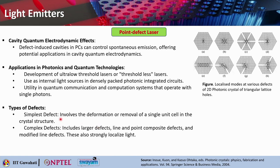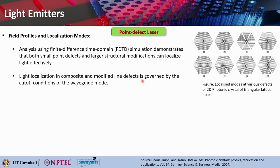There are different types of defects. The simplest involves deformation or removal of a single unit cell in a crystal structure. Complex defects involve larger defects such as line or point composite defects or modified line defects, which can strongly localize light. You can study field profiles and localization modes using finite difference time domain (FDTD) simulations. These FDTD simulations demonstrate that both small point defects and larger structural modifications are able to localize light effectively, and are the only way to visualize localization before fabrication.